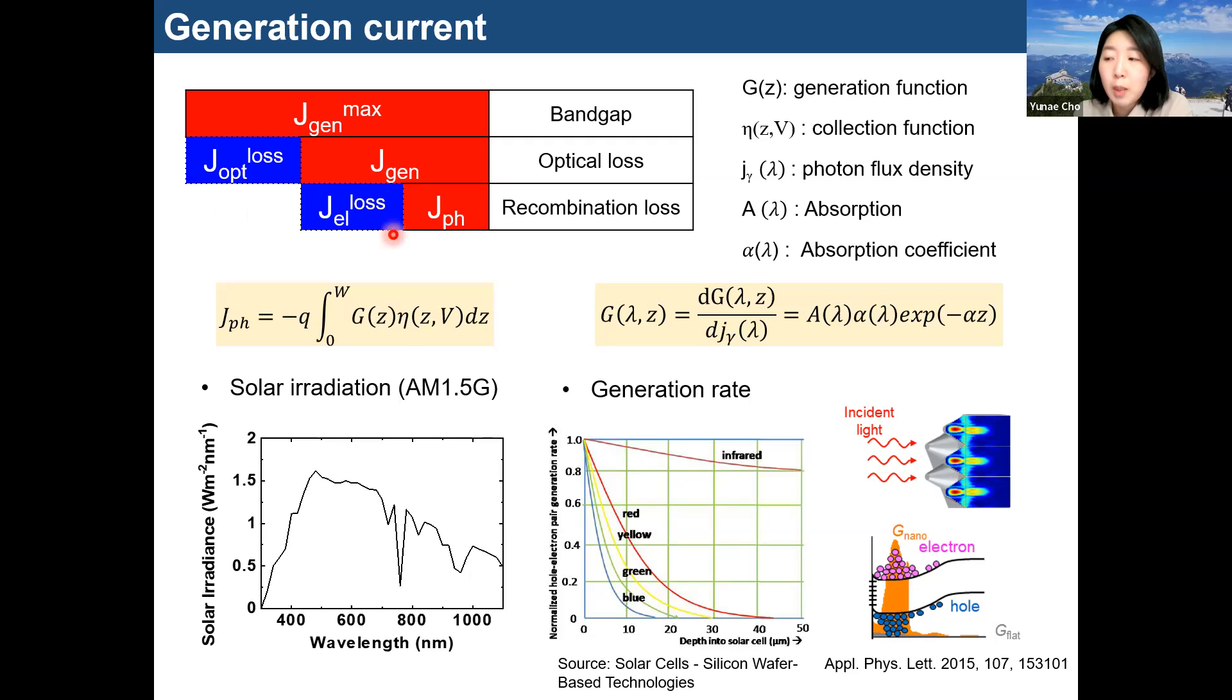The photocurrent can be expressed mathematically with the generation rate and collection function. The generation rate is shown in the formula. It composes the absorption coefficient and the incident flux. So the function depends on the wavelength and direct depth of incident light.